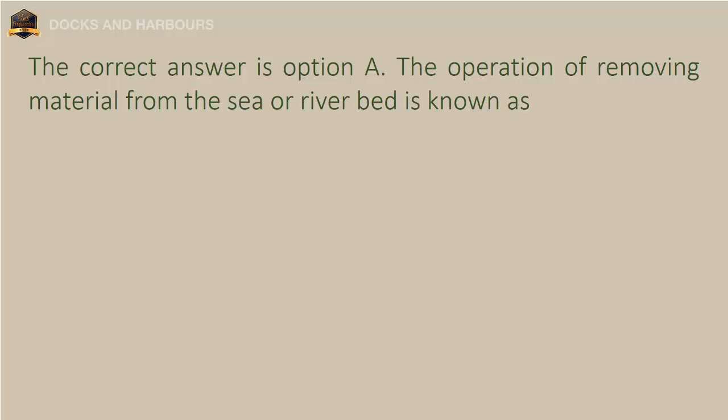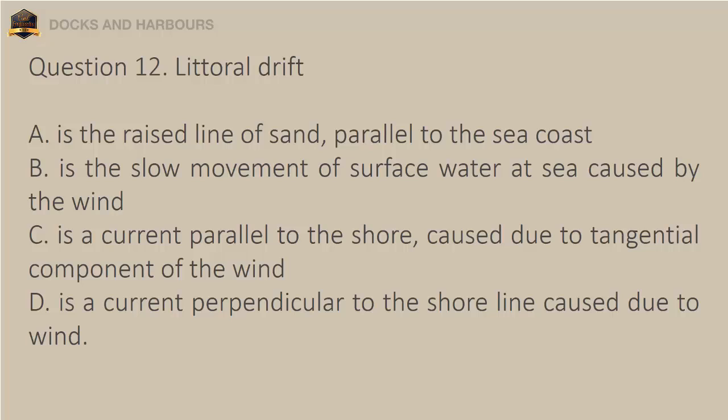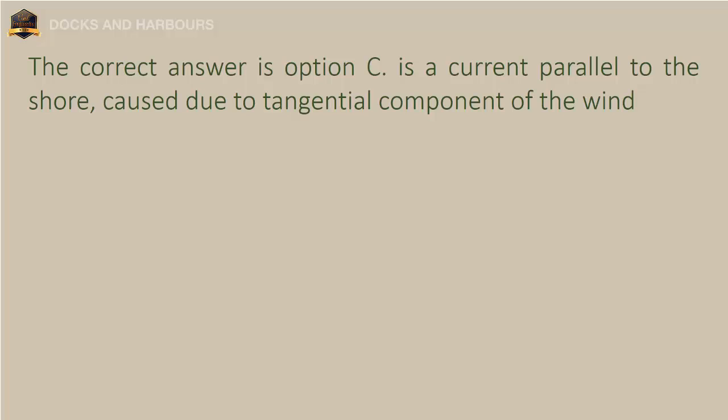Question 12. Littoral drift: a. Is the raised line of sand, parallel to the sea coast. b. Is the slow movement of surface water at sea caused by the wind. c. Is a current parallel to the shore, caused due to tangential component of the wind. The correct answer is option C: Is a current parallel to the shore, caused due to tangential component of the wind.